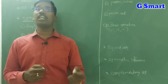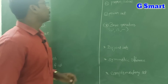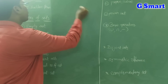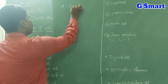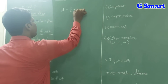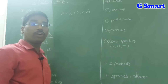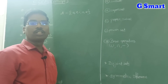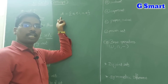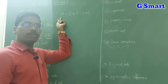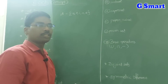Sets are denoted by capital letters and the elements in the sets are denoted by small letters. For example, writing A, E, I, O, U — these are the vowels in English, so I am denoting the set of vowels with capital A. Sets are denoted by capital letters and the elements in the sets are denoted by small letters.